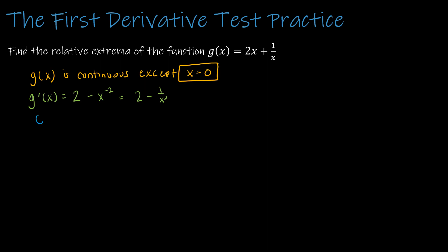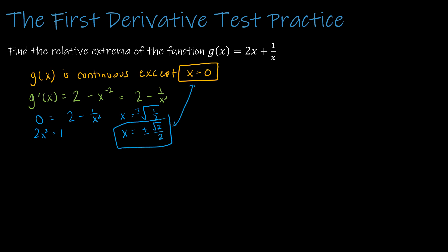Set g′(x) = 0: 0 = 2 − 1/x². Rearranging gives 2 = 1/x², then 2x² = 1, so x² = 1/2. Taking the square root gives x = ±√(1/2) = ±√2/2, rationalizing to remove the radical from the denominator. So our critical numbers are x = −√2/2 and x = √2/2, plus x = 0 from the discontinuity, which we use when dividing the domain.